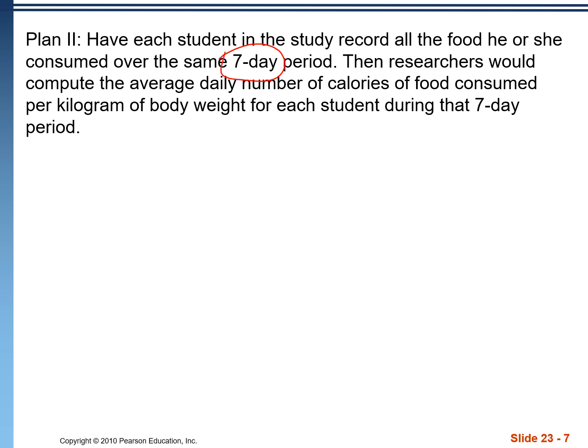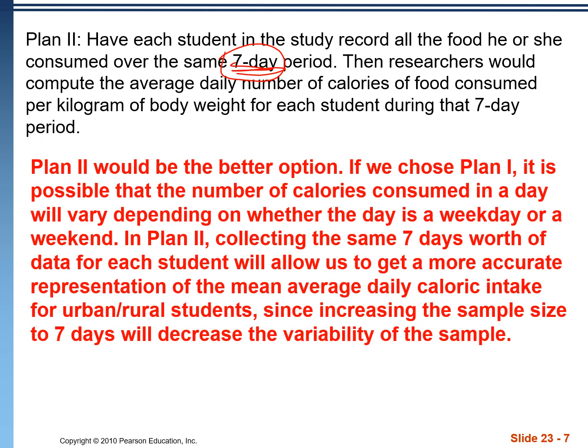So as long as we're not making any mistakes in the collection of our data, more data is better. A better explanation is to note a problem with plan one: if we choose plan one, it's possible that the number of calories consumed is going to vary depending on what day they're recording them. Maybe students are going to eat more on the weekends versus the weekdays or vice versa. In plan two, we won't have to worry about that — we're collecting the same seven days' worth of data for each student, including weekends and weekdays. If there are days where they're eating more or less, it's going to be included for all students, and then we're just finding an average across those seven days. Increasing the sample size is going to decrease the variability of the sample.